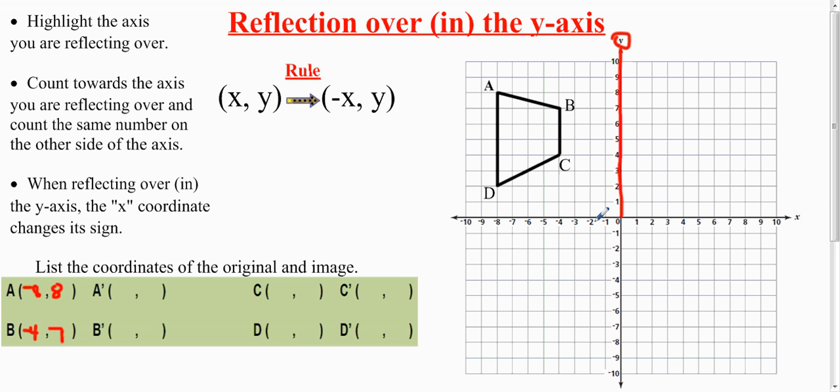Then you have C at negative 4 and positive 4. And D is negative 8 to the left, which is your x-coordinate, and 2, which is your y-coordinate going up. Now you've listed all the coordinates of the original image.